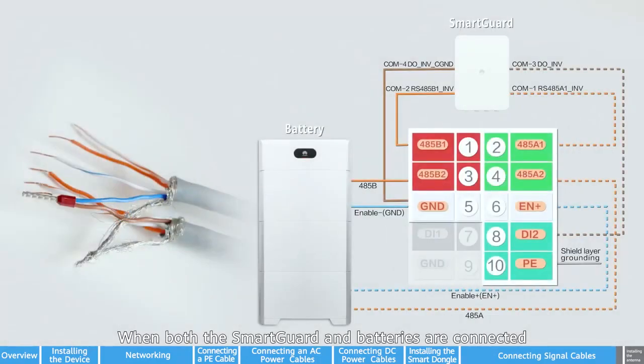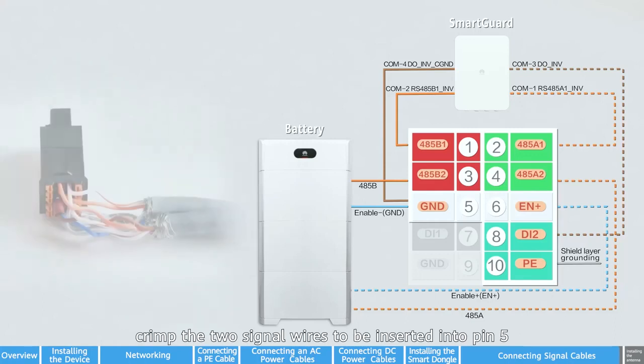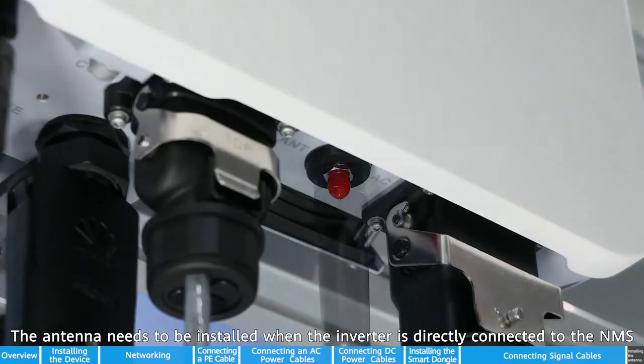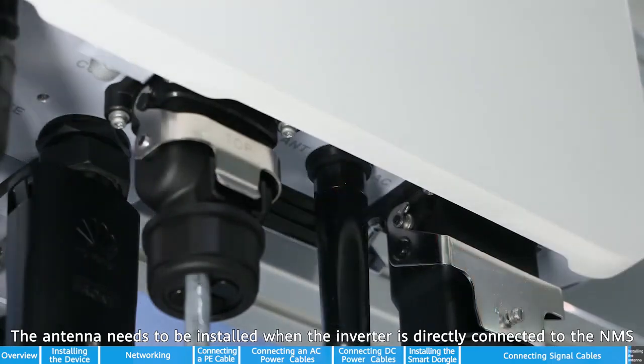When both the smart guard and batteries are connected, crimp the two signal wires to be inserted into pin 5. The antenna needs to be installed when the inverter is directly connected to the NMS. Power on the system.